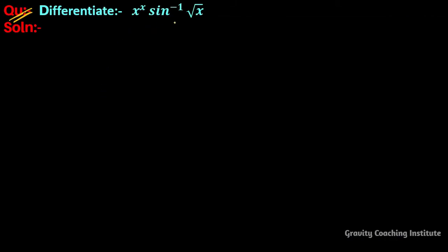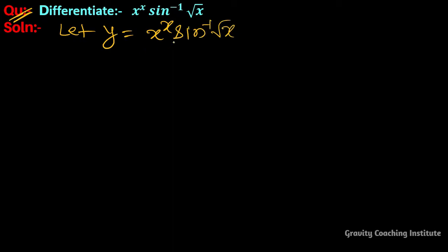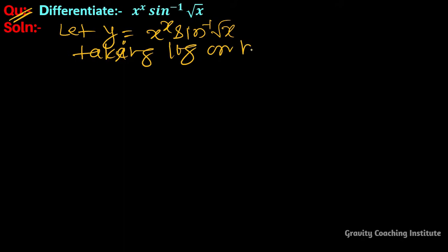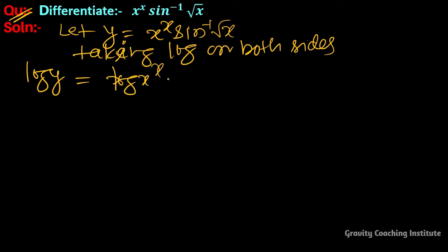Differentiate x to the power x into sine inverse root x. First of all, we let y equal to x to the power x into sine inverse root x. Now we take log on both sides. Taking log on both sides, log y equal to log x to the power x plus log sine inverse root x.